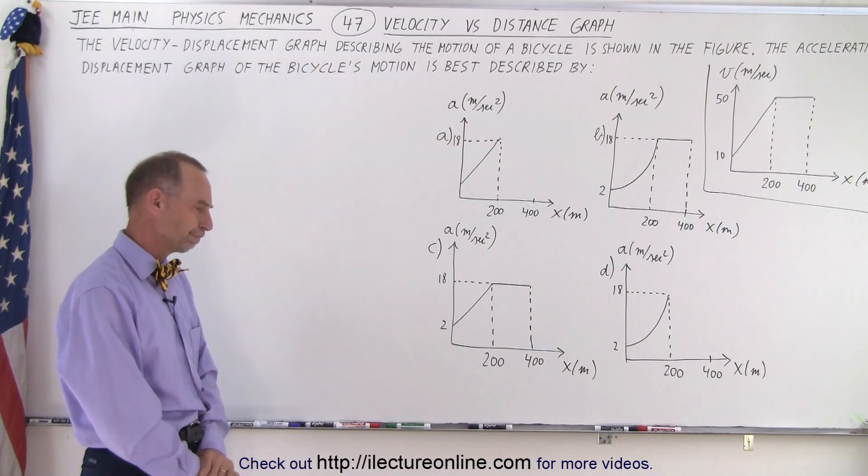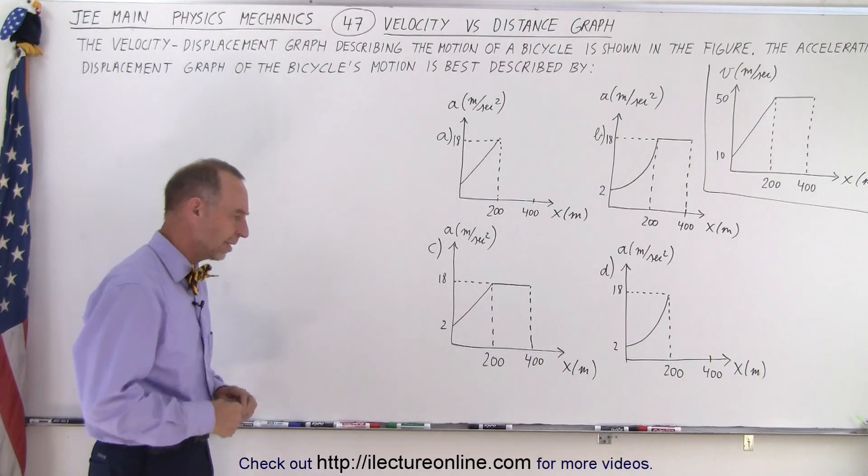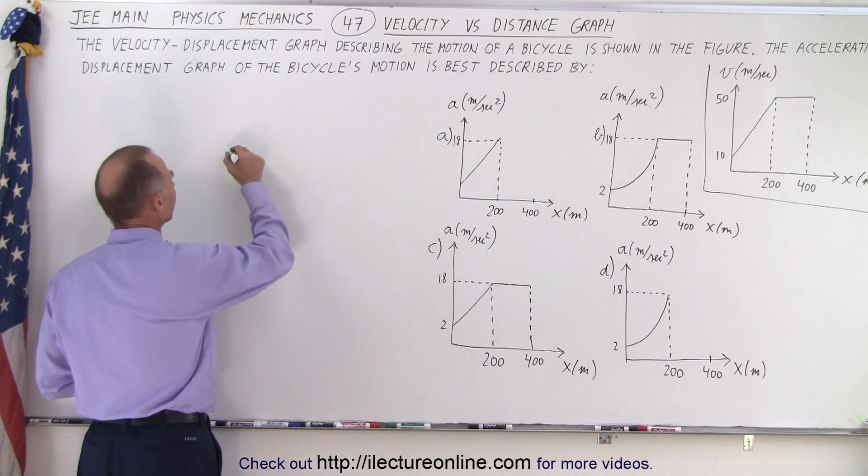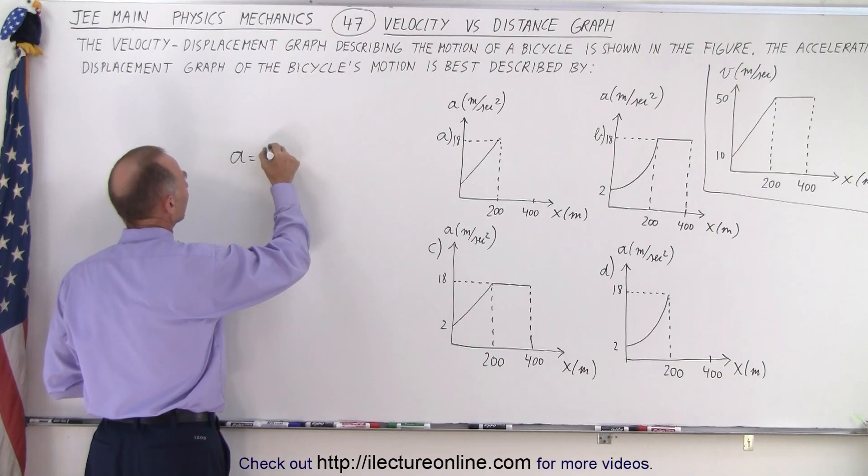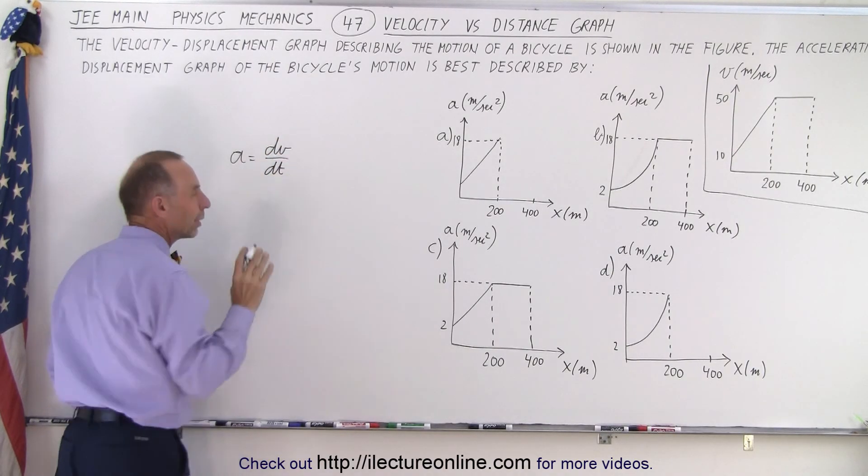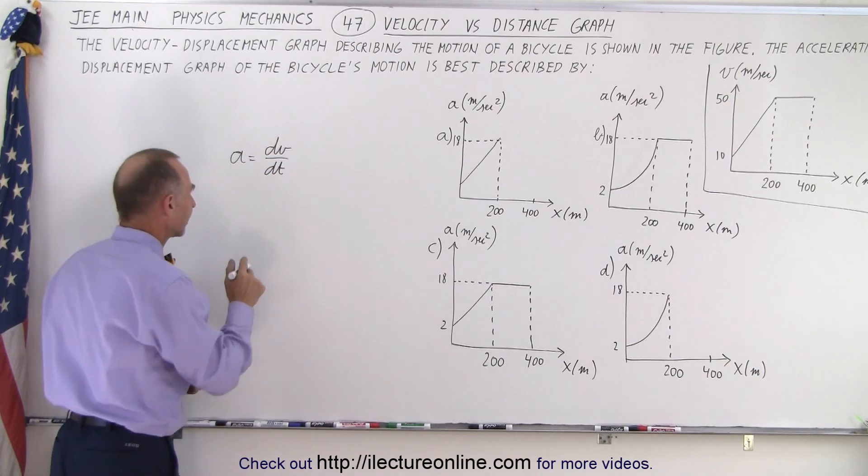So how do we go about doing that? Well, let's think about it this way. We know that acceleration is defined as dv dt but we can also write it like this. We can say the acceleration is equal to dv dx times dx dt.